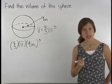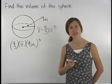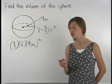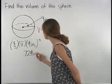Start by simplifying the exponent. 9 inches cubed is equal to 9 inches times 9 inches times 9 inches, or 729 inches cubed.